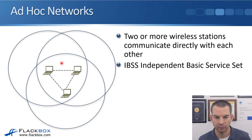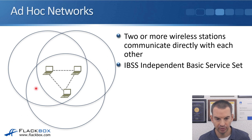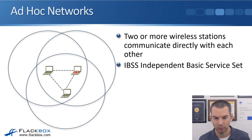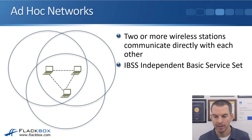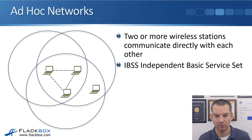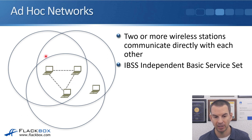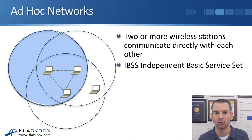In the example shown here, three laptops are all communicating directly with each other. The circles represent each laptop's coverage area. Because they're all within each other's coverage area, they can all communicate directly. However, there is a scalability issue: if we add another laptop, it may be within the coverage area of two nearby laptops but outside the coverage area of the one on the left.